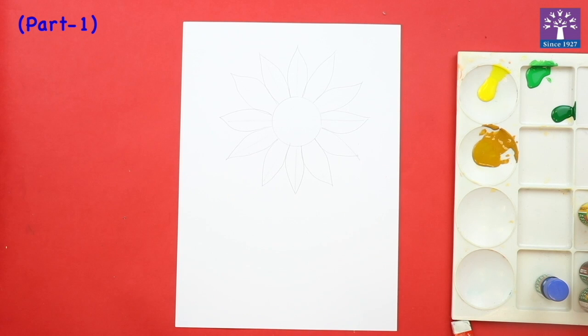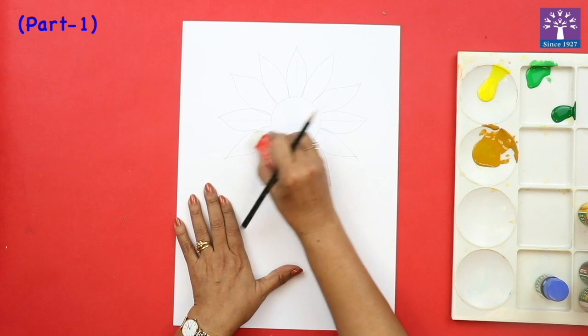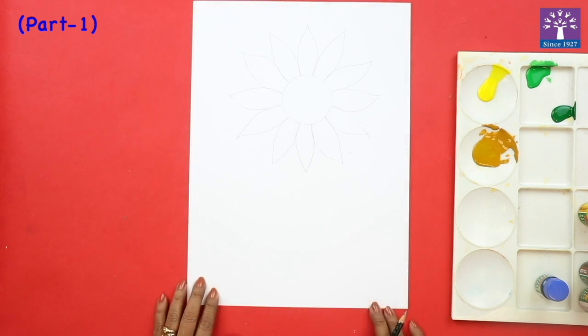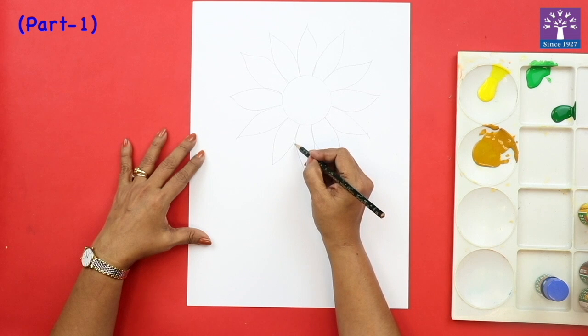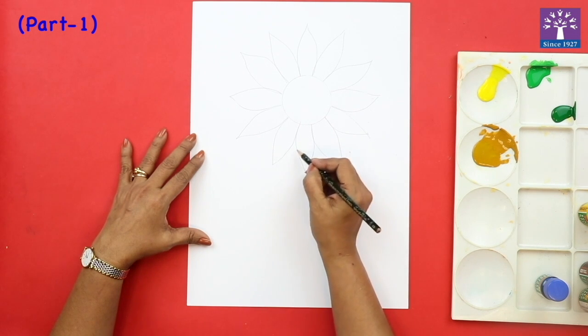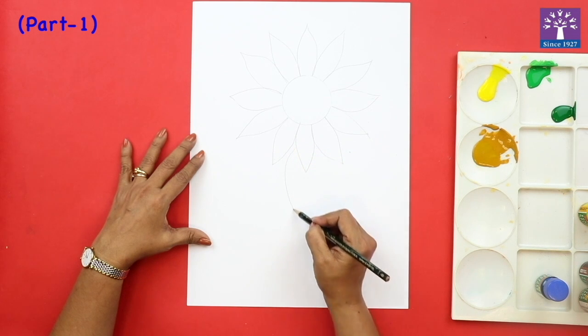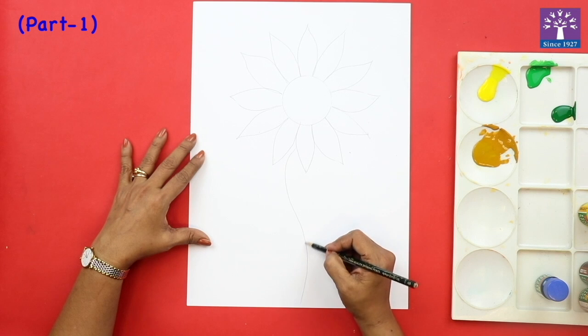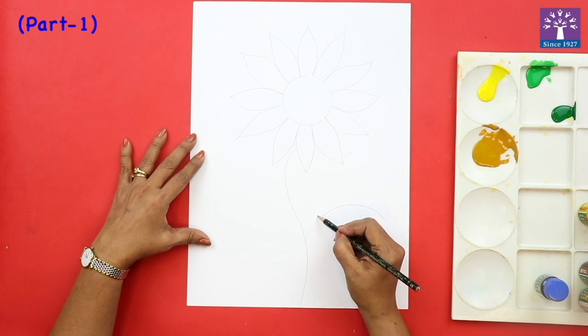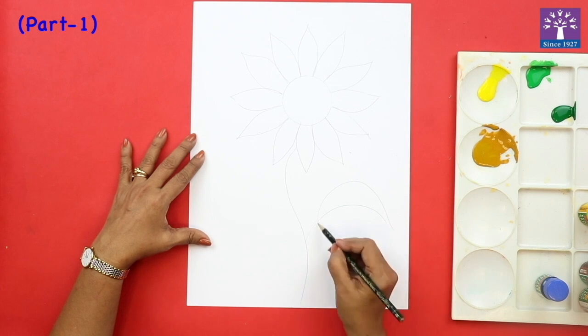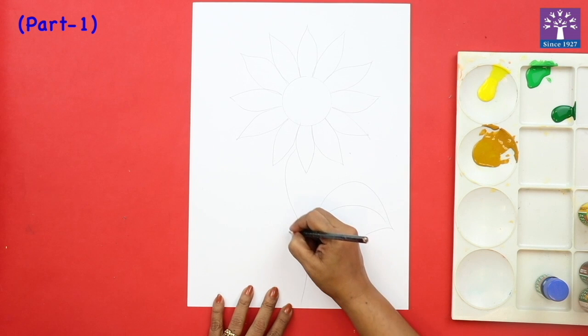So our sunflower is ready. All these were the guiding lines. Draw a stem and leaf below the sunflower. So I will draw a curved line from or from in between the two petals. You may draw one more leaf.